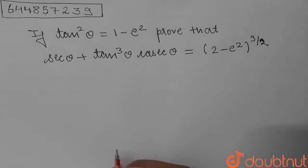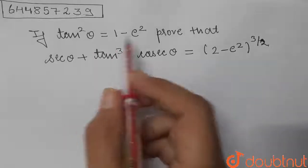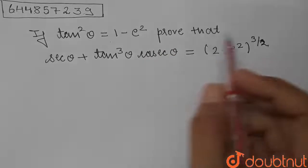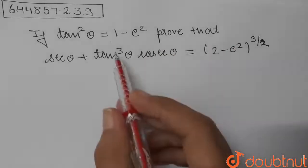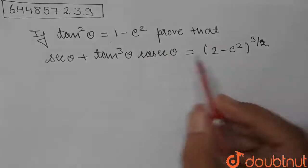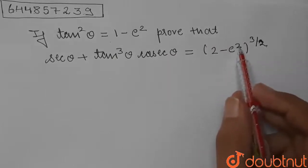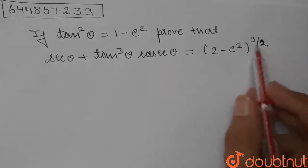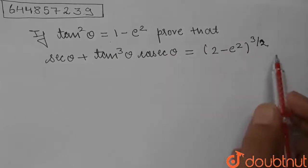Hello students. Today's question is: if tan squared theta is equal to 1 minus e squared, prove that sec theta plus tan cubed theta into cosec theta is equal to 2 minus e squared, whole raised to the power 3 by 2.